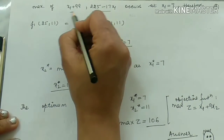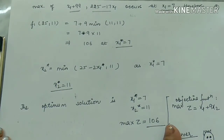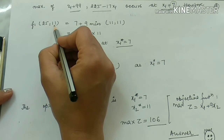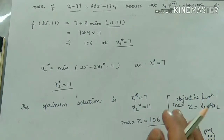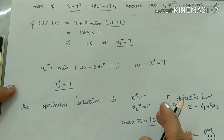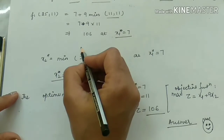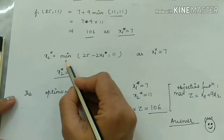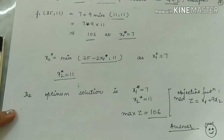After solving, the first range gives x1 + 99, and the second range gives 225 − 17x1, occurring at x1 = 7. We then find the maximum of these two values. The maximum occurs at x1 = 7, where both expressions equal 7 + 99 = 106. So the minimum value is 11 and the final functional value F1 = 106.